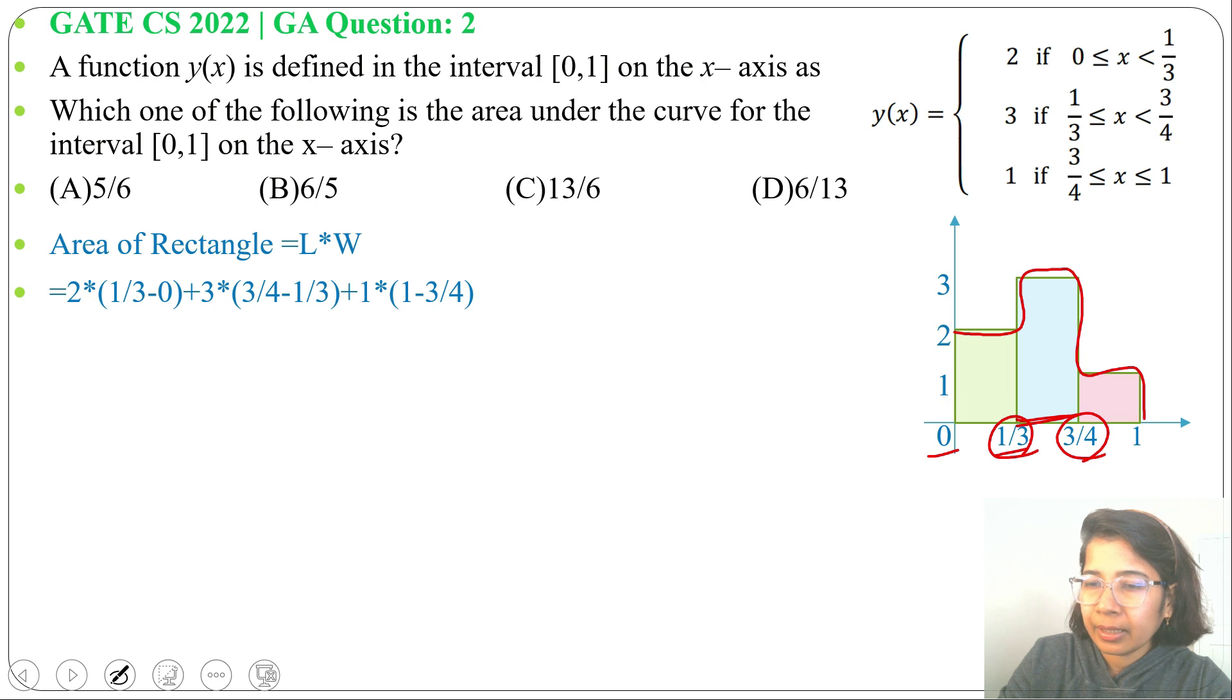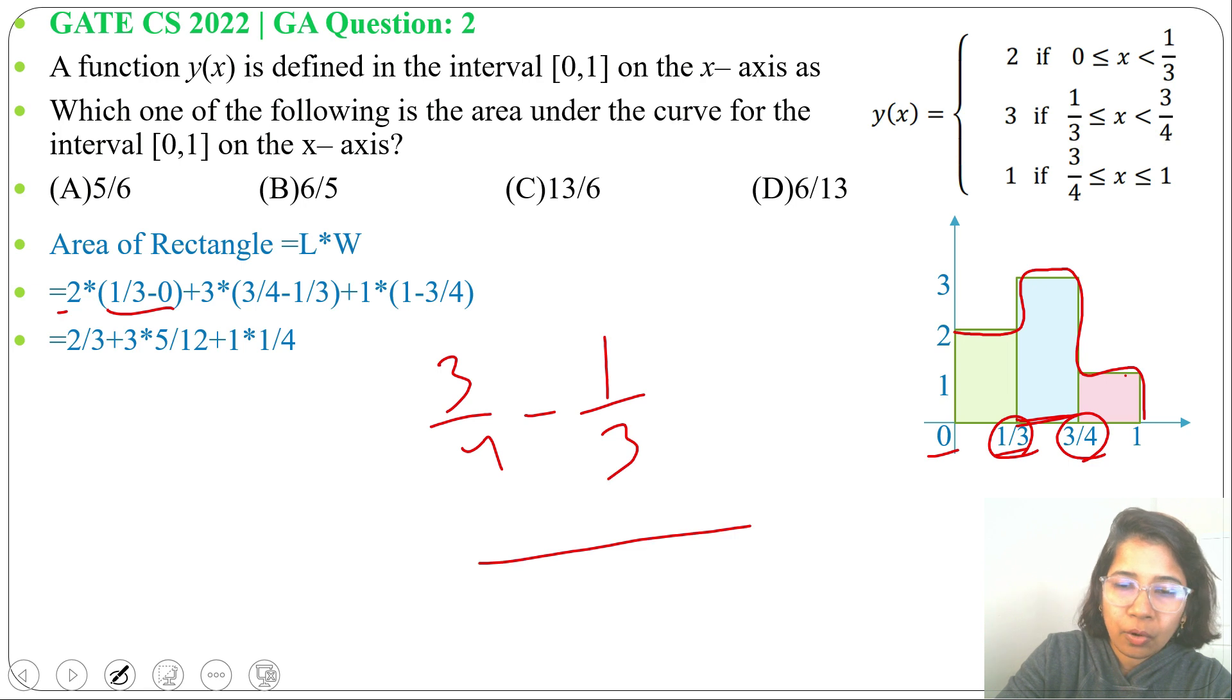Now for third rectangle area will be 1 times (1 - 3/4). Now 1/3 - 0 is 1/3, so 2/3. Then 3/4 - 1/3, 4 times 3 is 12. Now 3 times 3 is 9 minus 4 times 1 is 4.